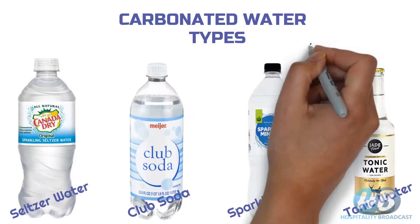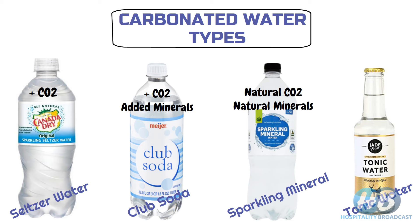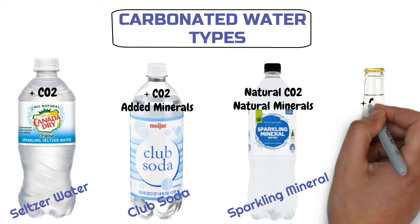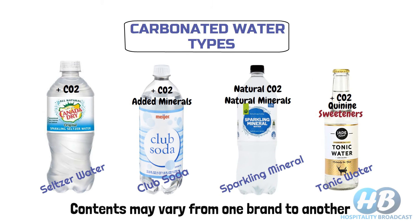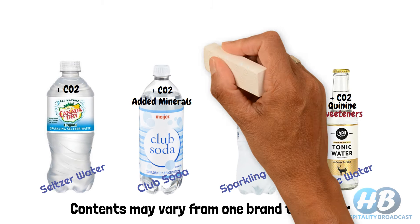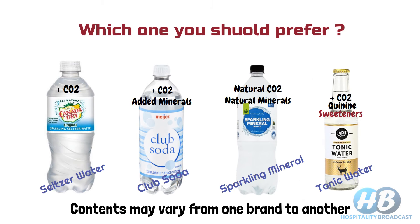Sparkling mineral water comes from springs or wells. It contains natural carbonation and minerals like salts and sulfur compounds, with no added minerals except in a few exceptions such as San Pellegrino. Lastly, tonic water — the key difference is the addition of quinine, which makes it a bitter drink, so we add sweeteners to counter its bitterness.